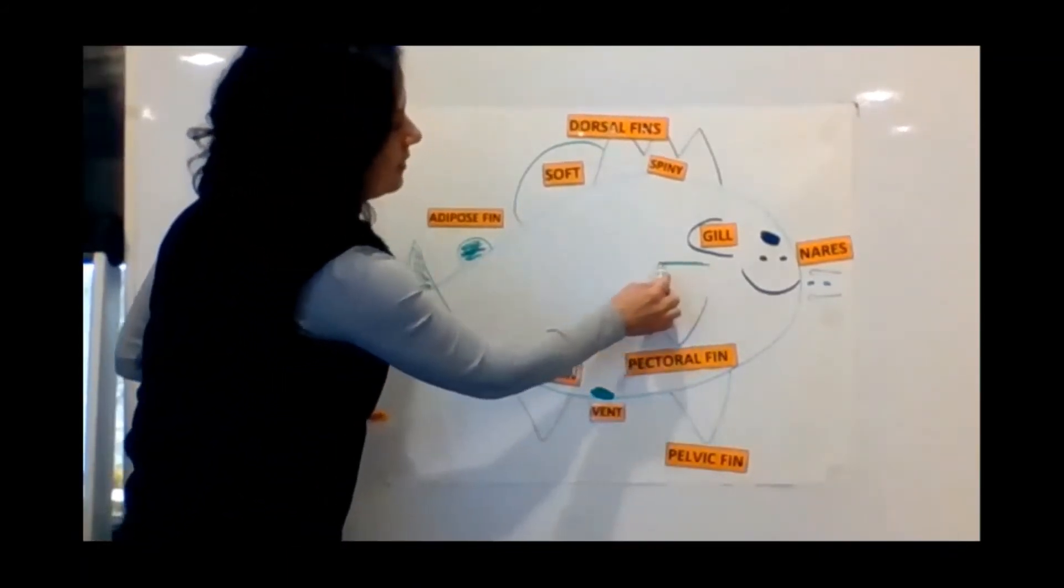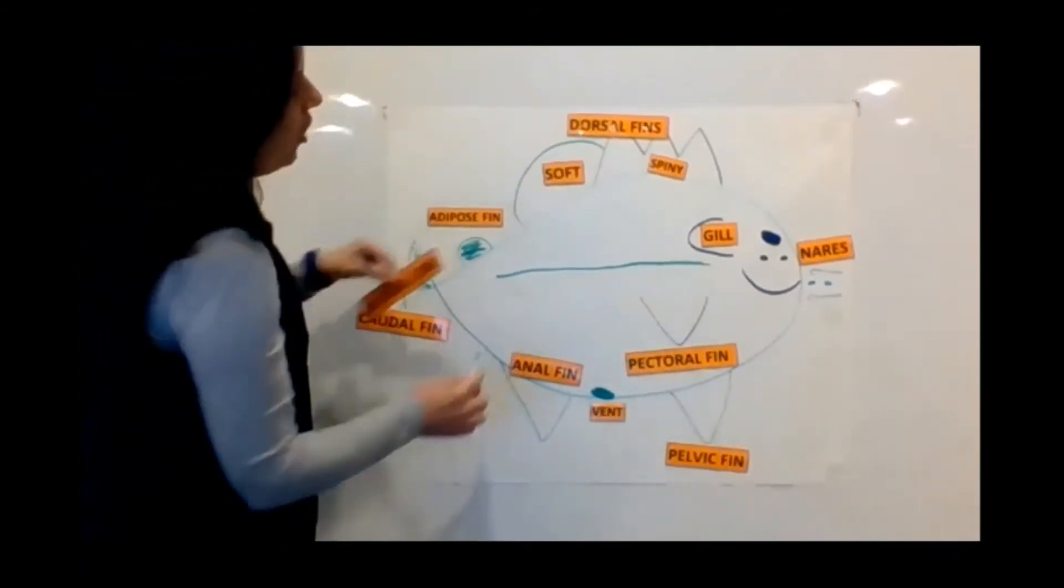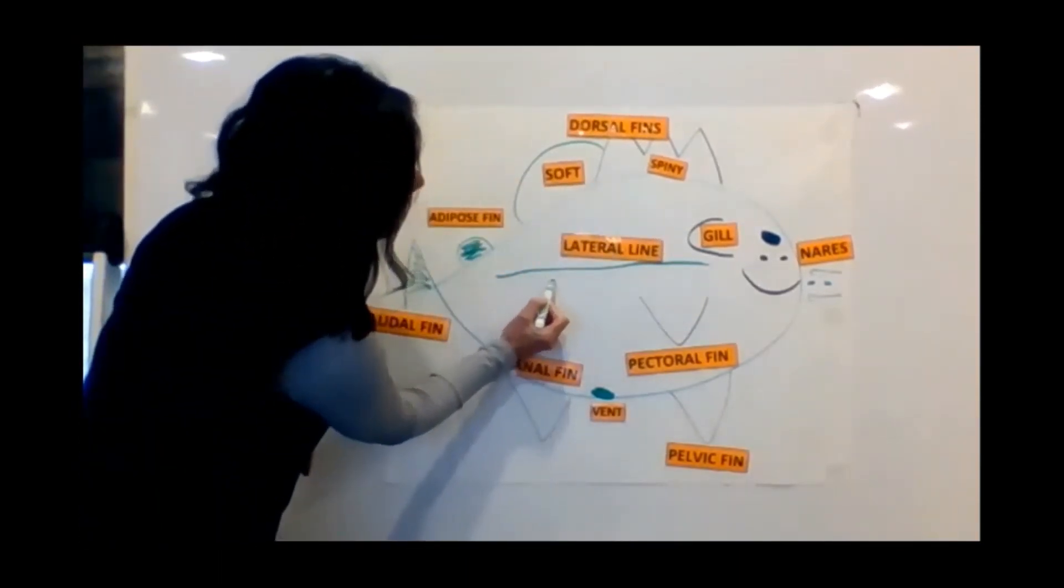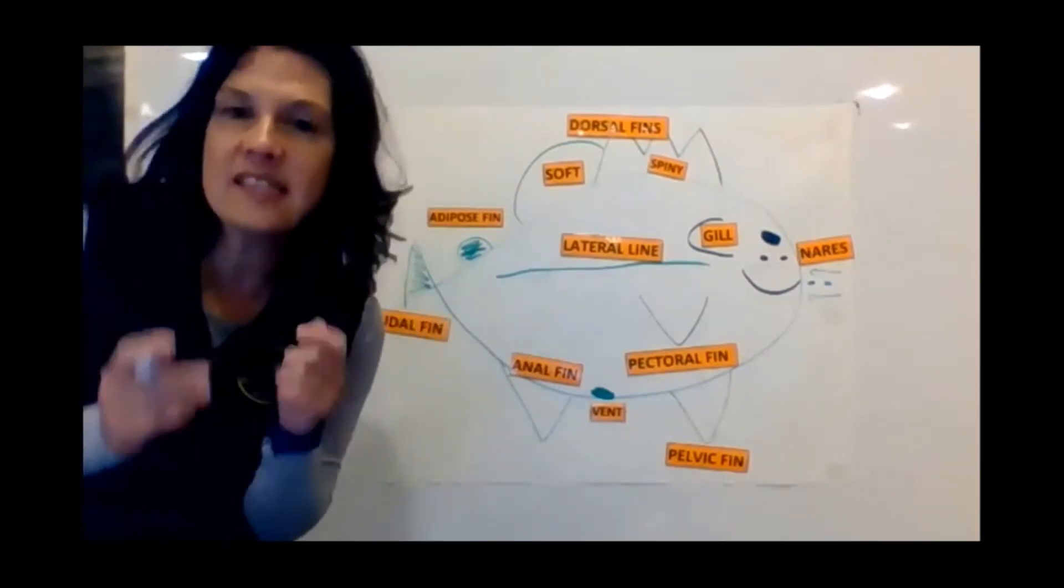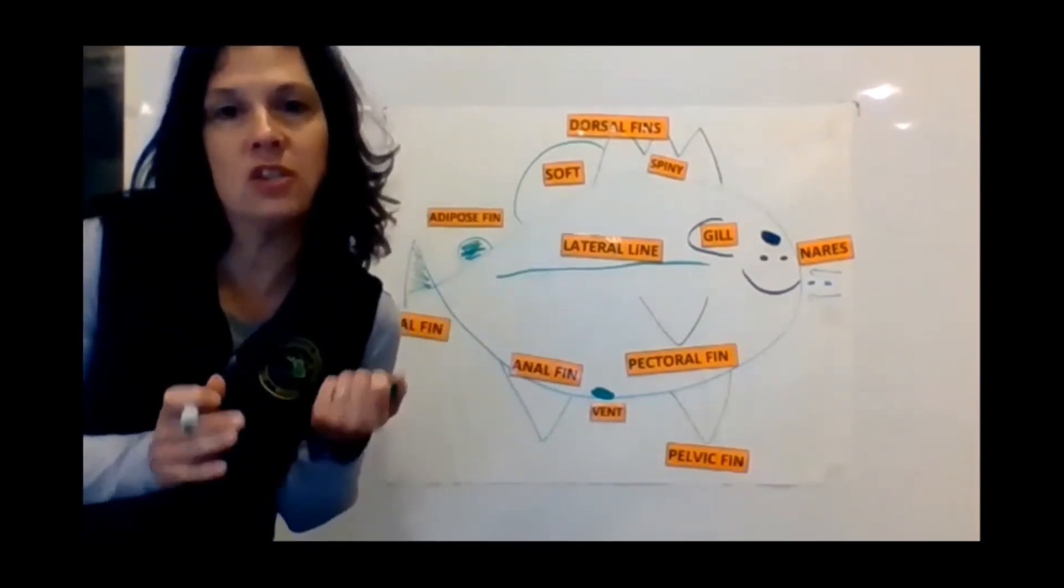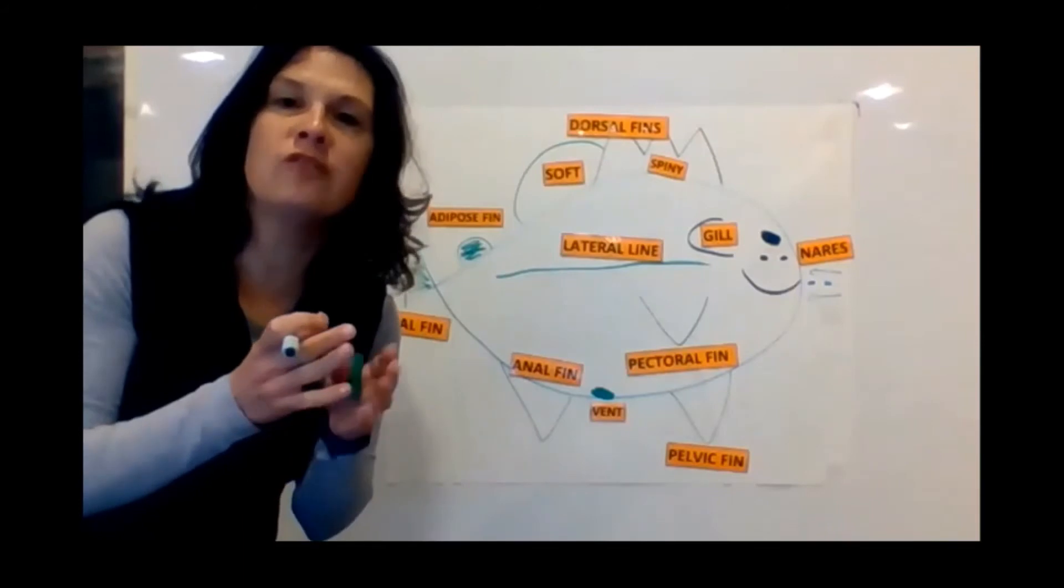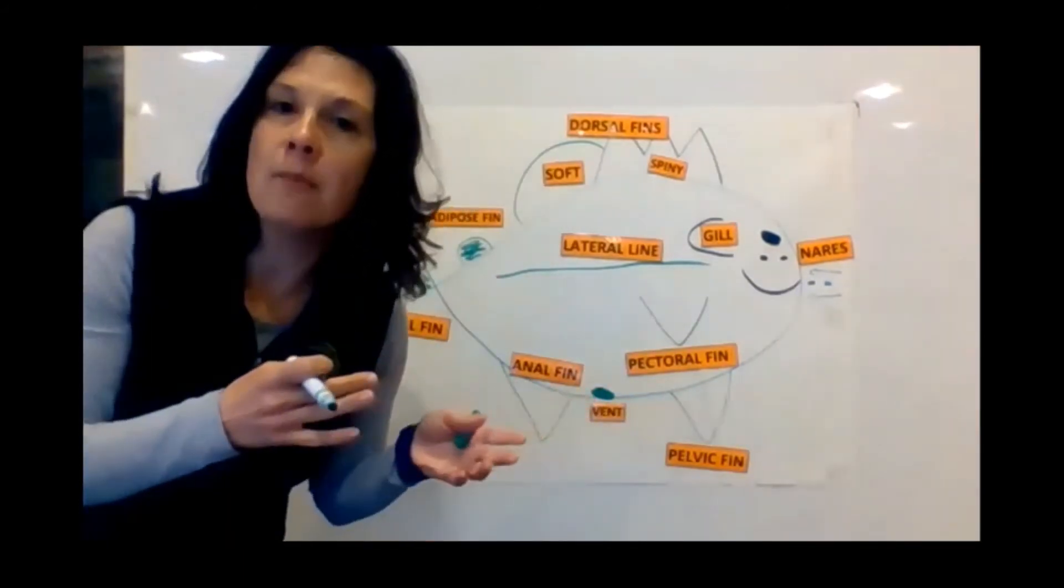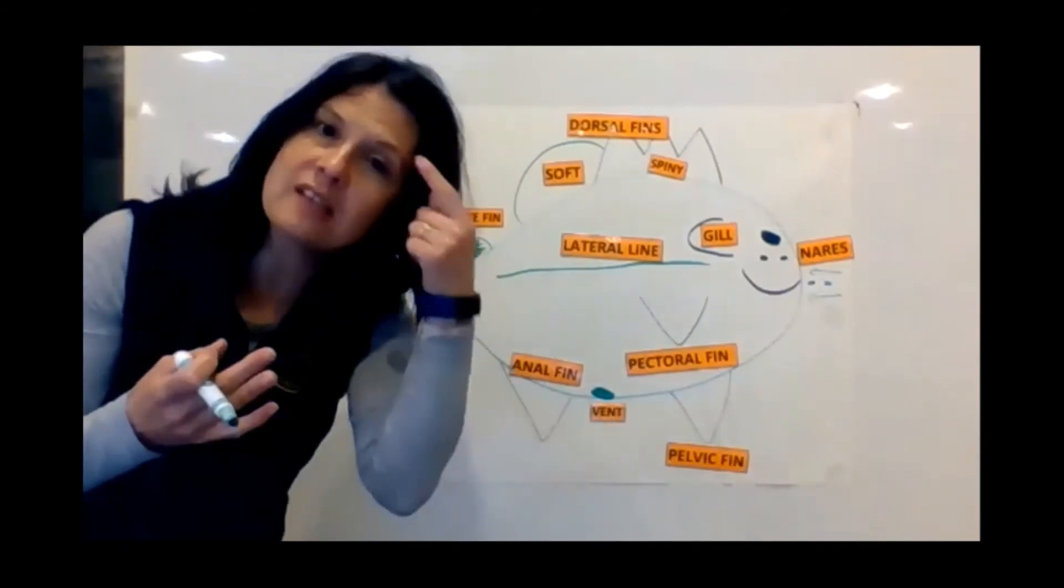I'm going to put this line that goes across the fish. This is actually made up of a bunch of little receptors, a lateral line. It senses movement and vibrations in the water. So as the fish moves and the water bounces off of rocks and other things, it feels that movement and vibrations and it sends a message to its brain.